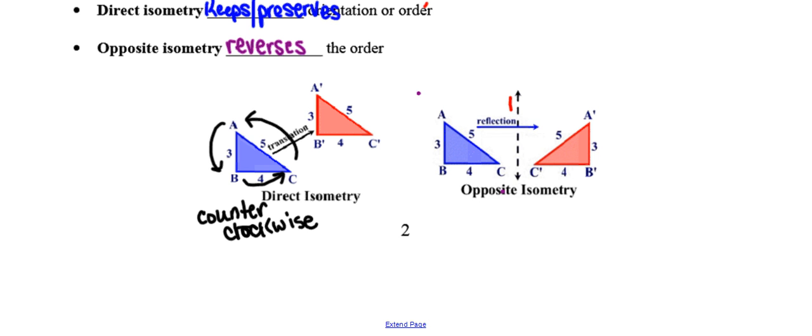If I go look at what has happened after the transformation has taken place, in moving from A prime to B prime, and then from B prime to C prime, and then lastly from C prime to A prime, it's again counterclockwise.